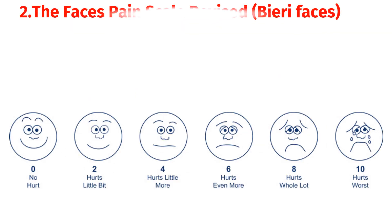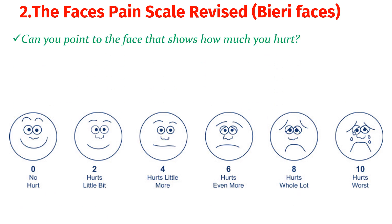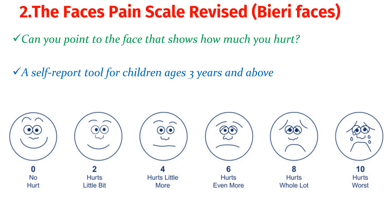The second tool is the Faces Pain Scale Revised. You ask the child: 'Can you point to the face that shows how much you hurt?' — as seen on the image. This is a self-report tool for children aged 3 years and above. The child touches a face showing how much pain they feel. If they point to 0 or the first face, there is no pain; if they point to 10, there is severe pain.